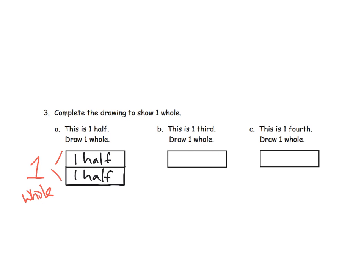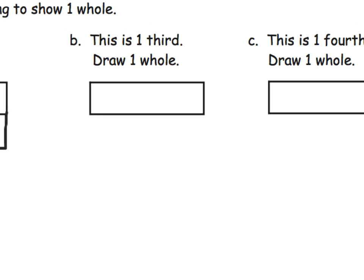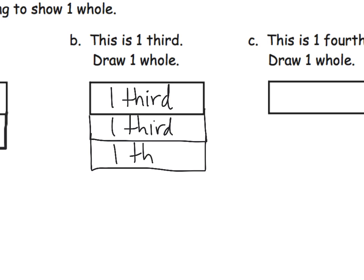Over here, if this is one-third, so let's zoom in a little bit here. So if this piece right here is one-third, and we want to draw one whole, well, how many thirds do we need to draw one whole? So that would mean we need another one and one more. So we would need three-thirds to equal one whole. So that is now equal to one whole.